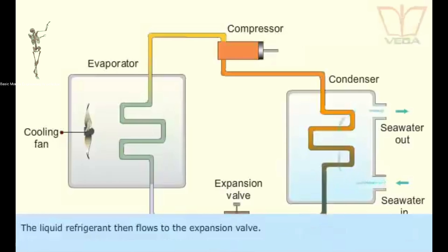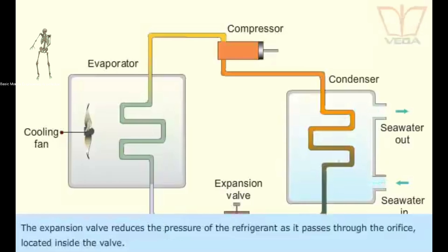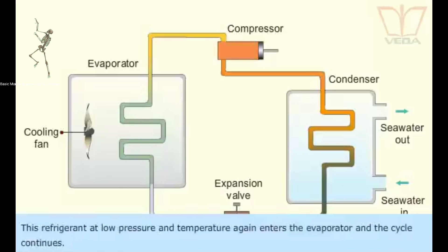The liquid refrigerant then flows to the expansion valve. The expansion valve reduces the pressure of the refrigerant as it passes through the orifice located inside the valve. This refrigerant at low pressure and temperature again enters the evaporator and the cycle continues.